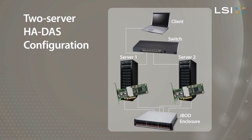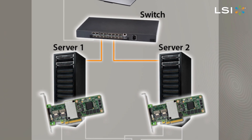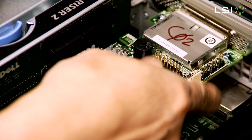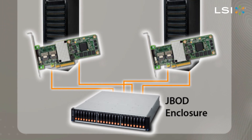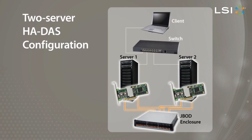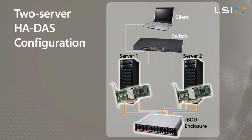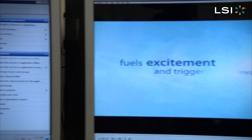This is a typical two-server HA setup in a data center or small business. The client or end-user system connects through a switch via Ethernet to Server 1 and Server 2. Each server has an LSI HA-DAS MegaRAID controller with 2x4 external SAS connectors. The connectors cable out into a JBOD storage enclosure redundantly, allowing each server access to all of the drives in the JBOD while also allowing the HA controllers to communicate with each other.